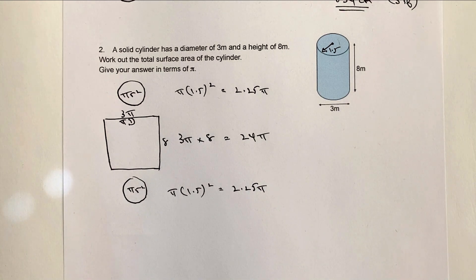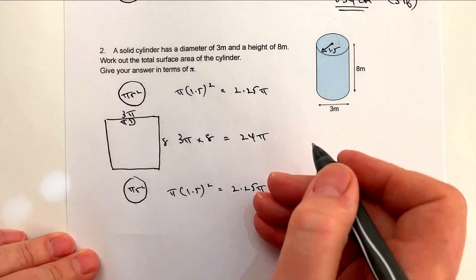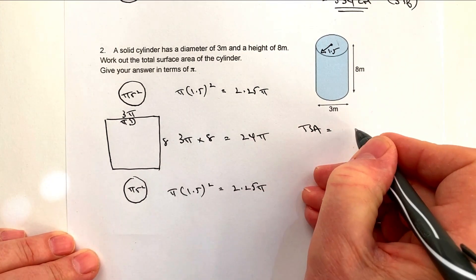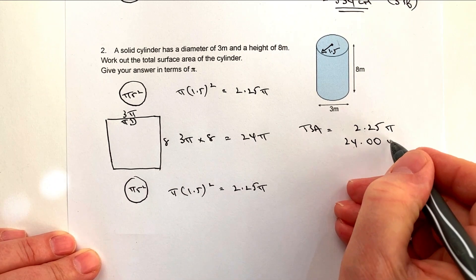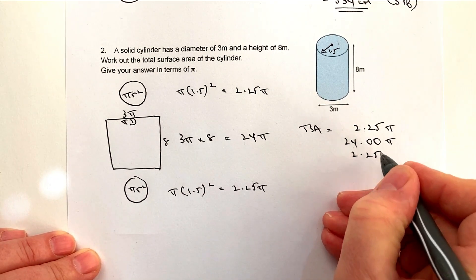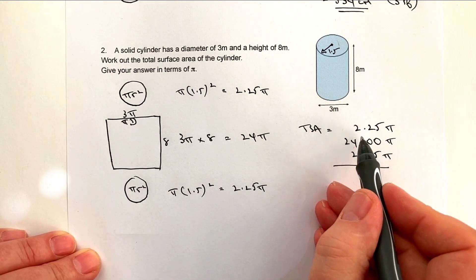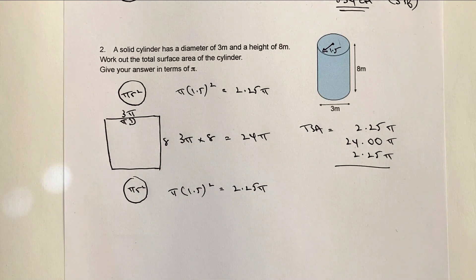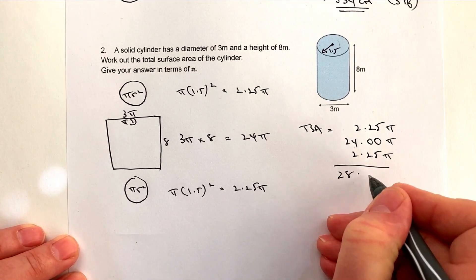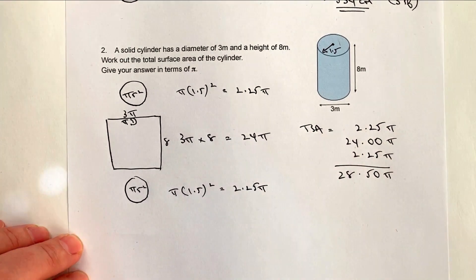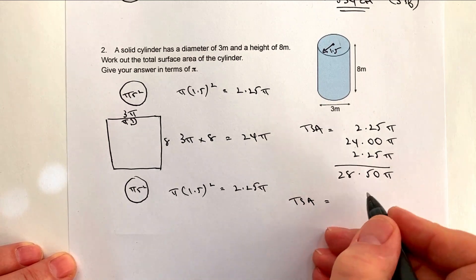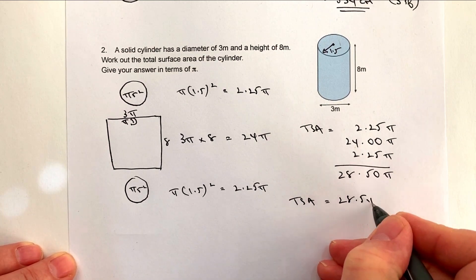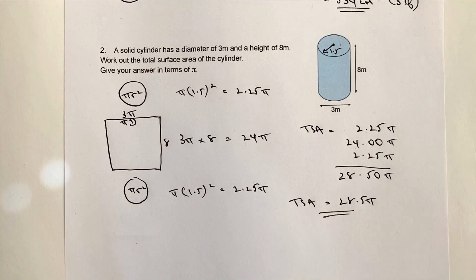But we don't need to convert it then to the decimal equivalent. We could just simply say the total surface area equals... Now I'm going to be a bit careful with the decimal points. This is 24.00π. And this is 2.25π. And you can see here, hopefully, that I've lined up the decimal points just to make sure that I'm going to be able to calculate this accurately. And what I'll end up with is 28.50π. So the answer in terms of π would be the total surface area. And if you want to put 28.50 or 28.5π, it's exactly the same number. Hopefully, that's okay for you.